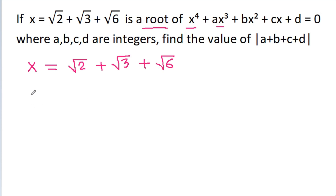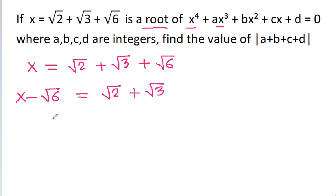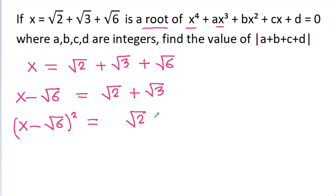So, instead of putting the value of x directly, we rearrange to get x - √6 = √2 + √3. And if we square both sides, then (x - √6)² = (√2 + √3)².